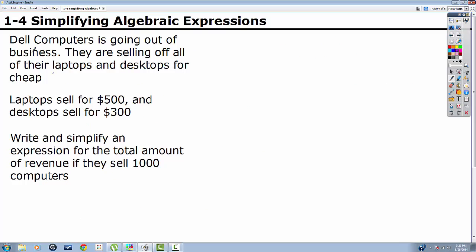That will take us to our final example. Got a little word problem here. Dell Computers is going out of business. They're selling off all of their laptops and desktops for cheap. We're selling laptops for $500, desktops for $300. We want to write and simplify an expression for the total amount of revenue if they sell 1,000 computers. So the first thing you have to do with these problems is identify what's the variable. Now what you can do, we have laptops and desktops, but we don't want two variables, we want a single variable. So we're going to identify laptop.